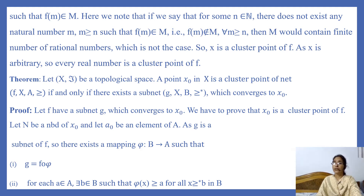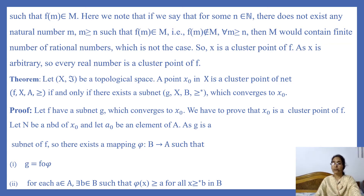If for some n in N there did not exist any natural number m with m ≥ n such that f(m) belongs to M, then M would contain only finitely many rational numbers. But we know M contains infinitely many rational numbers, so this is not possible. Therefore, for each n in N, there exists some m in N such that f(m) belongs to M, and so x is a cluster point of f. Since x is any arbitrary real number, every real number is a cluster point of f.